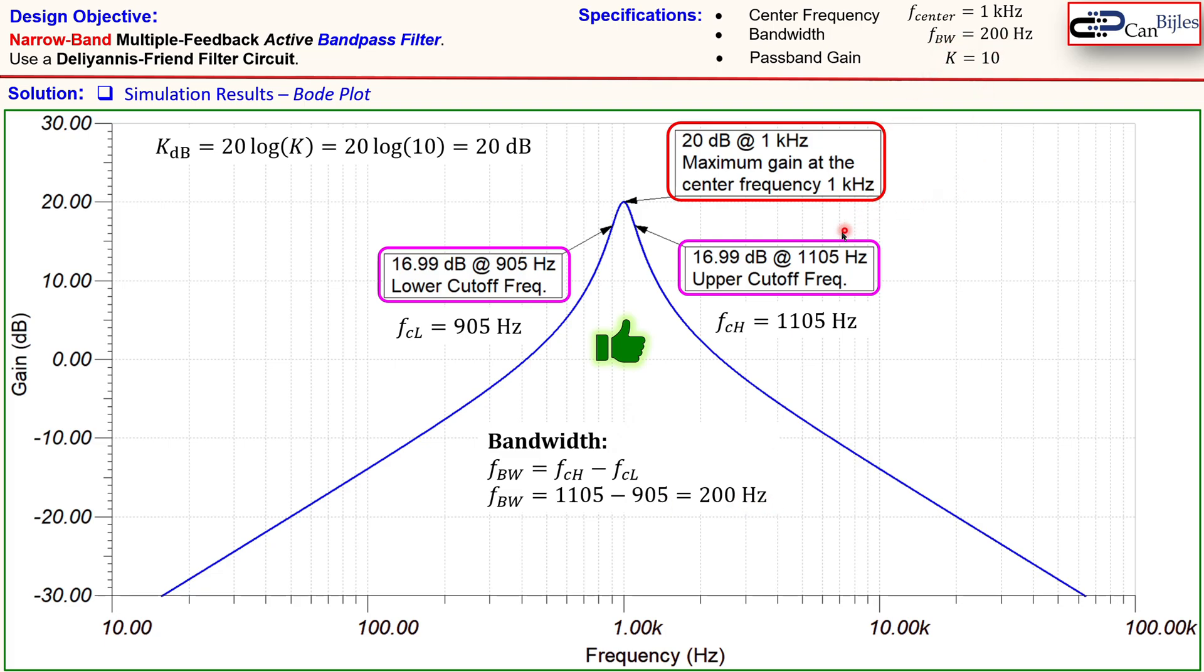All right that was our example considering the narrowband multiple feedback active bandpass filter. We have used the Deliyannis-Friend filter circuit in order to design this circuit and use our design equations to calculate the components. If you have any questions or comments please let me know and I will try to answer them as soon as possible. Don't forget to like and share these videos so that we can reach more people for these interesting topics. Thanks for your cooperation and see you next time in another video.